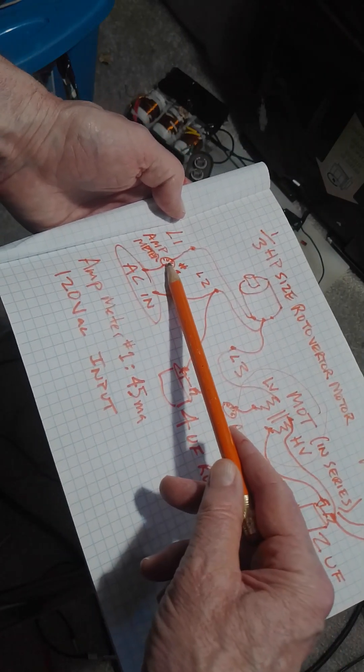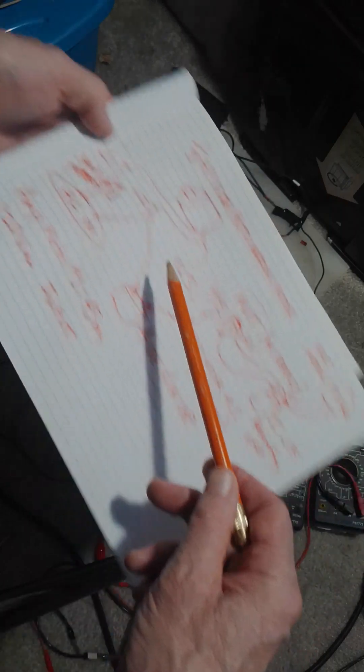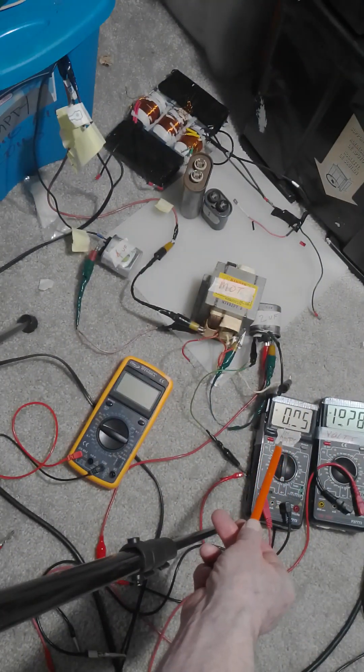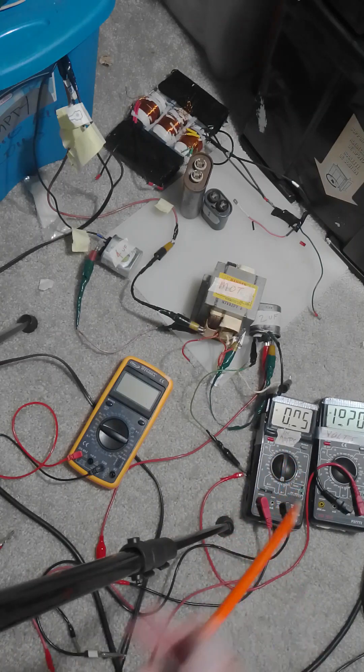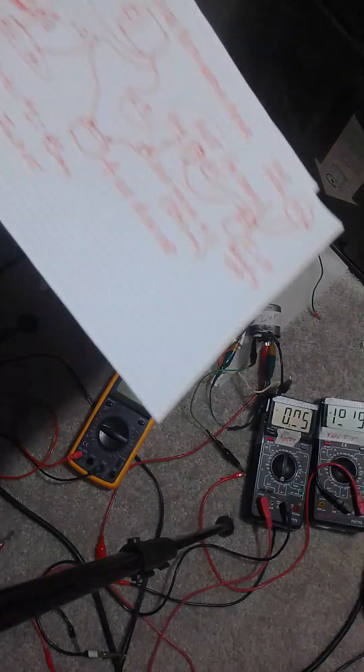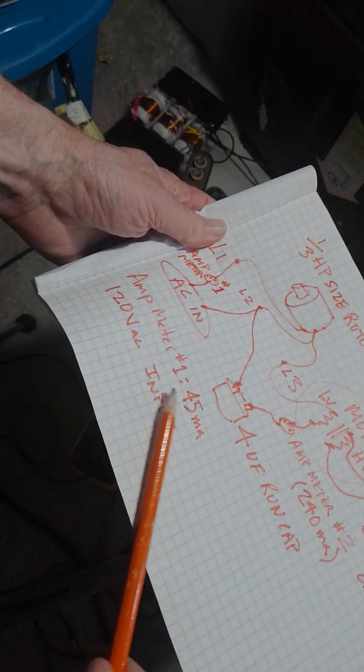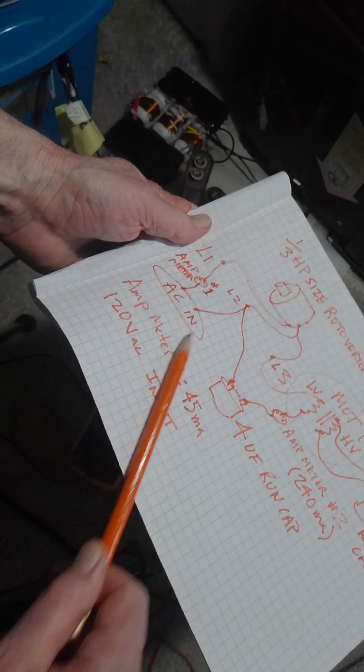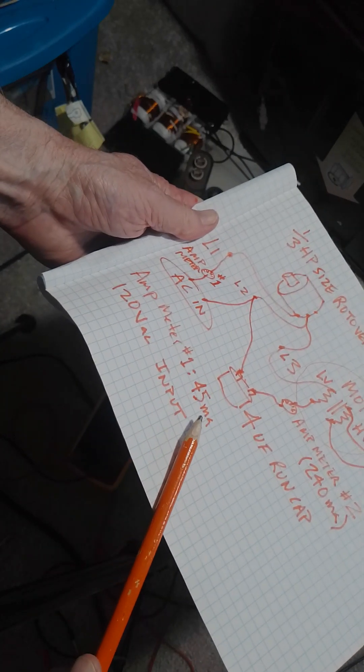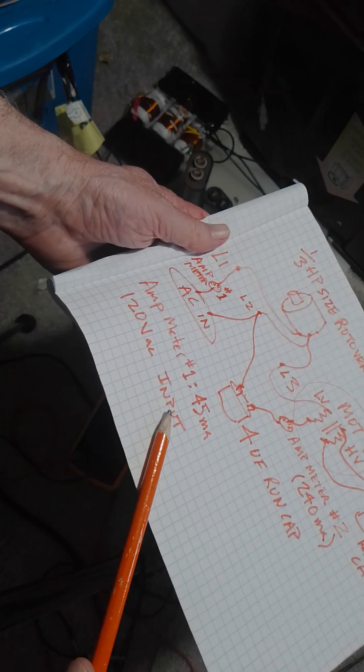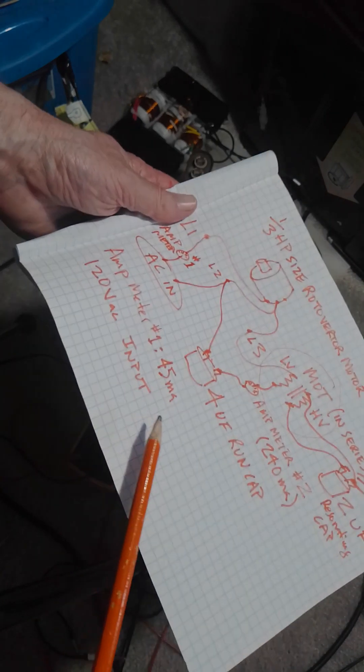And I have an amp meter in line here. That's this right here. And it's about 45 milliamps, it goes from 4 to 5. So I wrote that here - amp meter number 1, 45 milliamps. And we have the grid so it's 120 volt AC input.